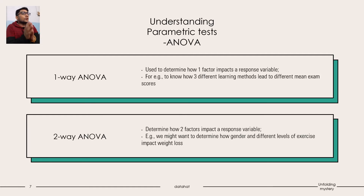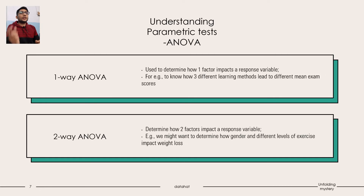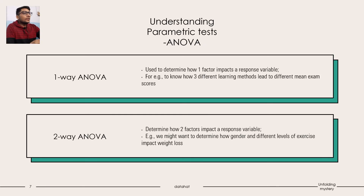Two-way ANOVA: we want to determine how gender and different levels of exercise impact weight loss. Different levels of exercise and gender together would have more than two groups, and we have two features. So we apply two-way ANOVA here. We have a categorical variable, and we are understanding what is the impact of different groups on our response variable — in this case, weight loss.